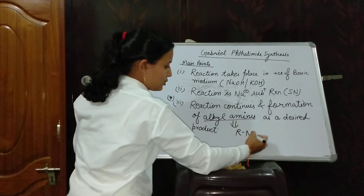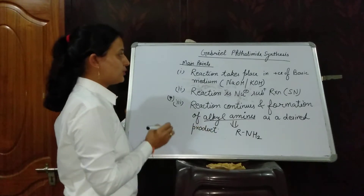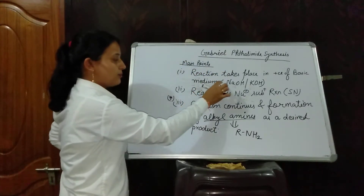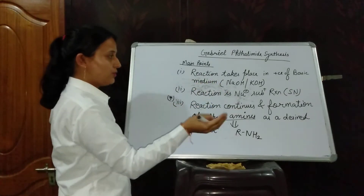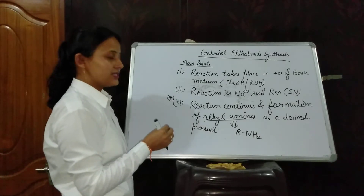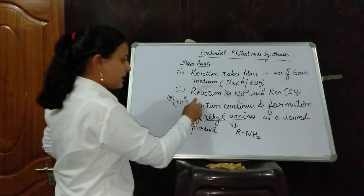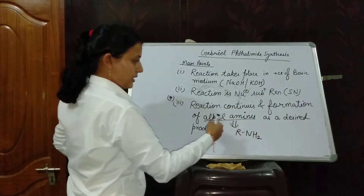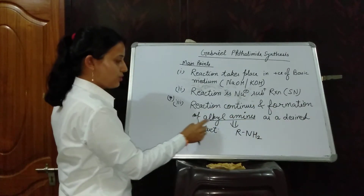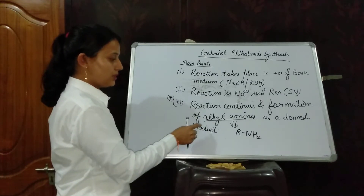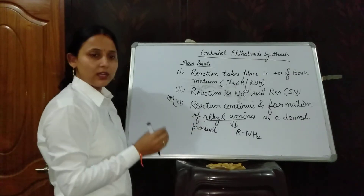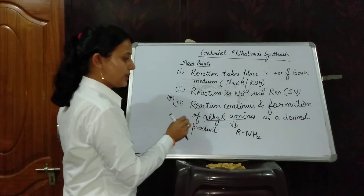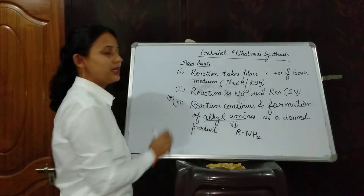We will form RNH2 during this reaction mechanism — alkyl amines. This reaction is not used to form aniline; aniline cannot be formed by this reaction mechanism. Only alkyl amine can be prepared by Gabriel Phthalimide synthesis. This is the distinguished point of this reaction.